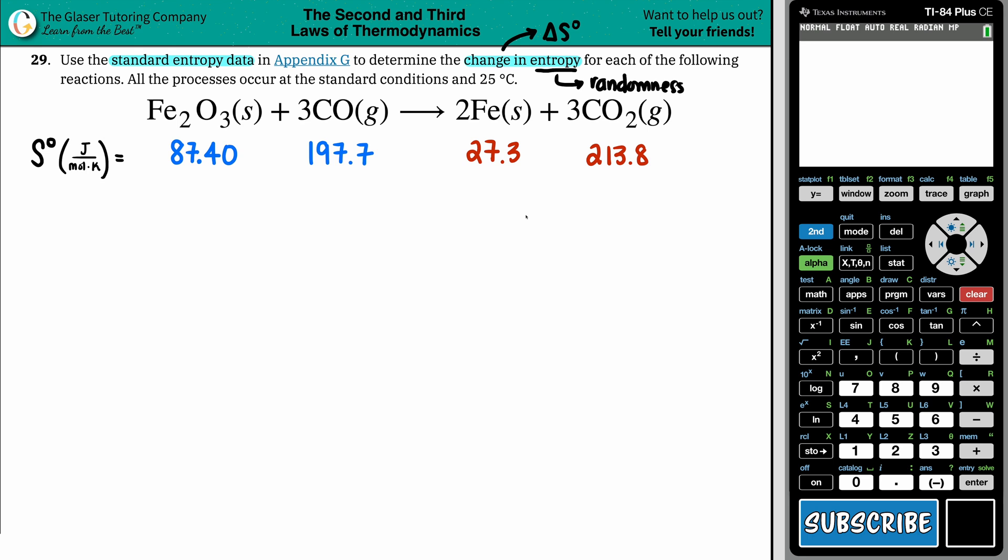Now, what are we going to do with these values? Well, it's this simple formula right here. It's the change in entropy for the whole entire reaction, RXN as reaction, is equal to the sum. So sum means addition. So it's the sum of all the products minus the sum of all the reactants. So basically, in essence, it's always products minus reactants, products minus reactants.